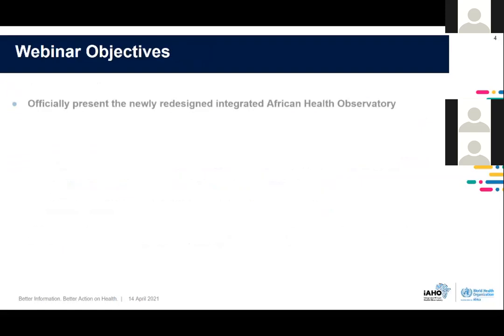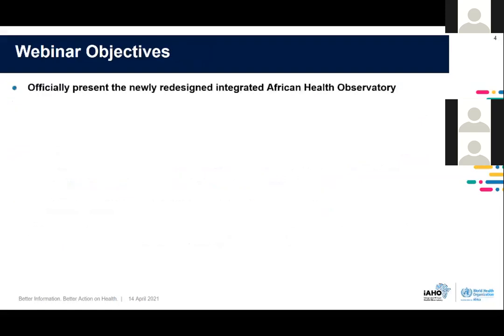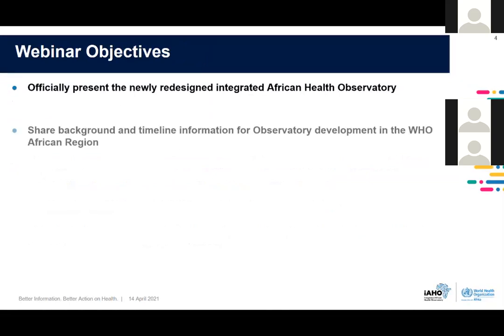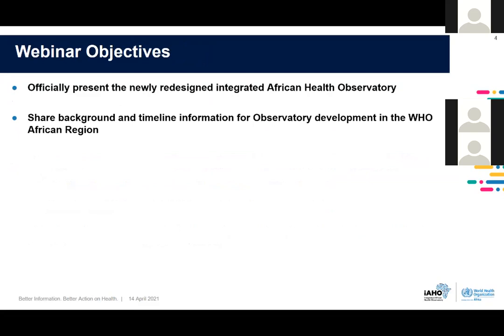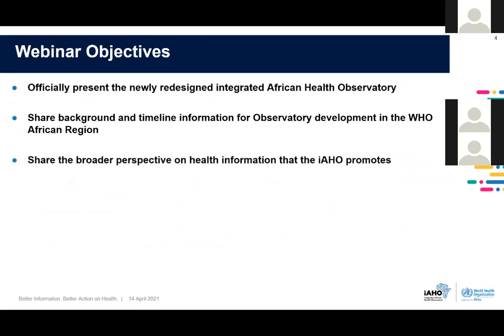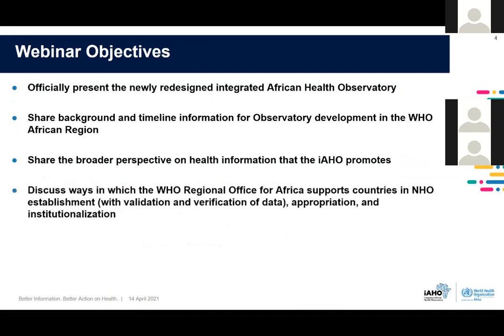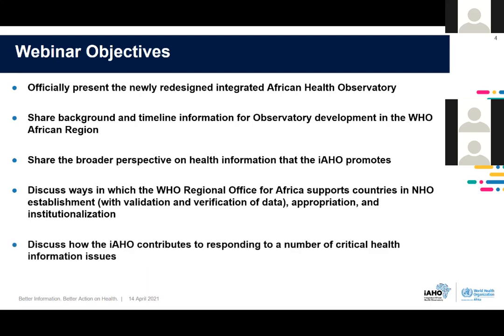I'll quickly go over the objectives before I hand over to Serge. The first objective is to officially present this newly redesigned Integrated African Health Observatory. Share some background and timeline information for the development of the observatory in the African region. Share the broader perspective on health information that the IAHO promotes. Discuss ways in which the WHO regional office for Africa supports countries in the establishment of their national health observatories, with validation and verification of data, as well as appropriation and institutionalization. Discuss how the IAHO contributes to responding to critical health information issues, and we also want this to be the starting point for the development of a community of practice. Over to you, Serge.